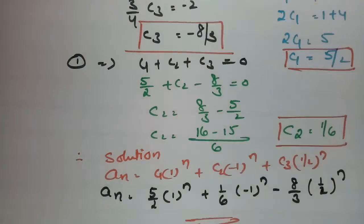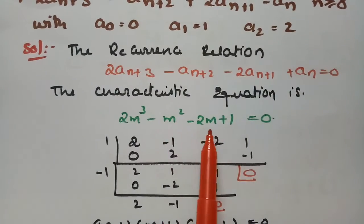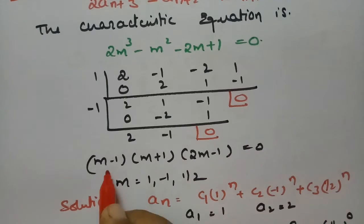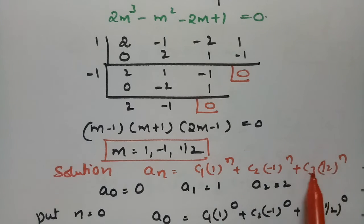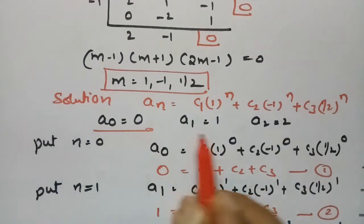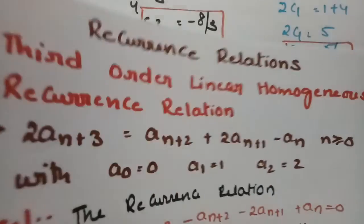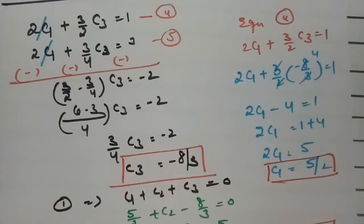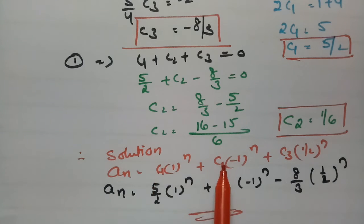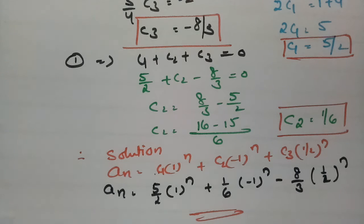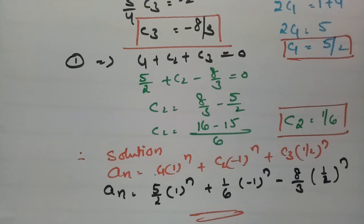To summarize the steps: first write the recurrence relation, then form the characteristic equation, find the roots — here 1, -1, and 1/2, which are distinct and real — write the general solution, apply the initial conditions a₀=0, a₁=1, a₂=2 to get three equations, solve for c₁=5/2, c₂=1/6, c₃=-8/3, and substitute back. Thank you for watching. I will be uploading more solutions for third order linear homogeneous recurrence relations — please practice, share with friends, like, comment, and subscribe.